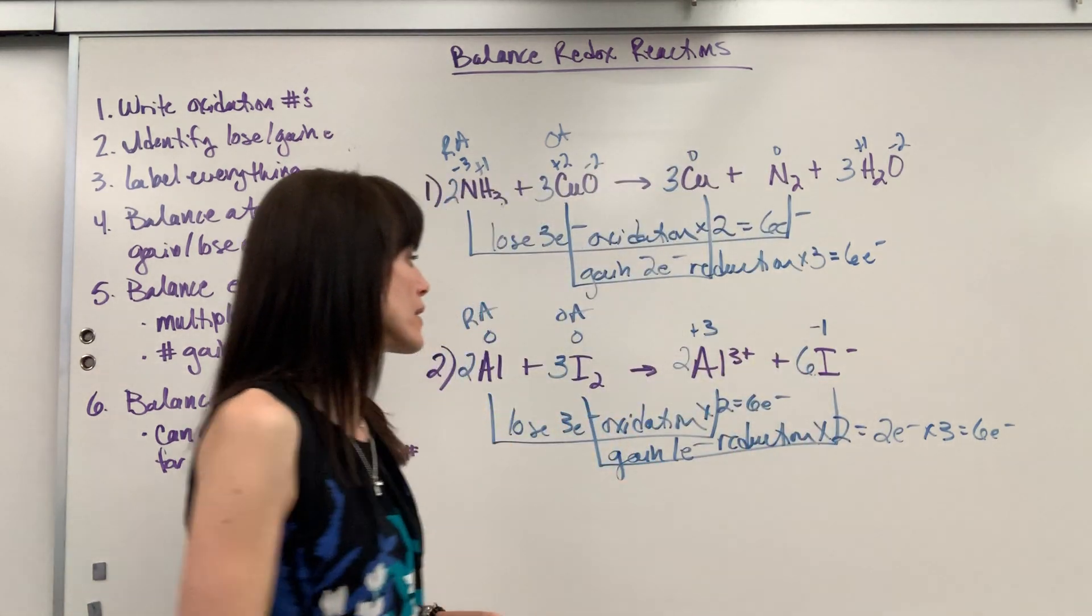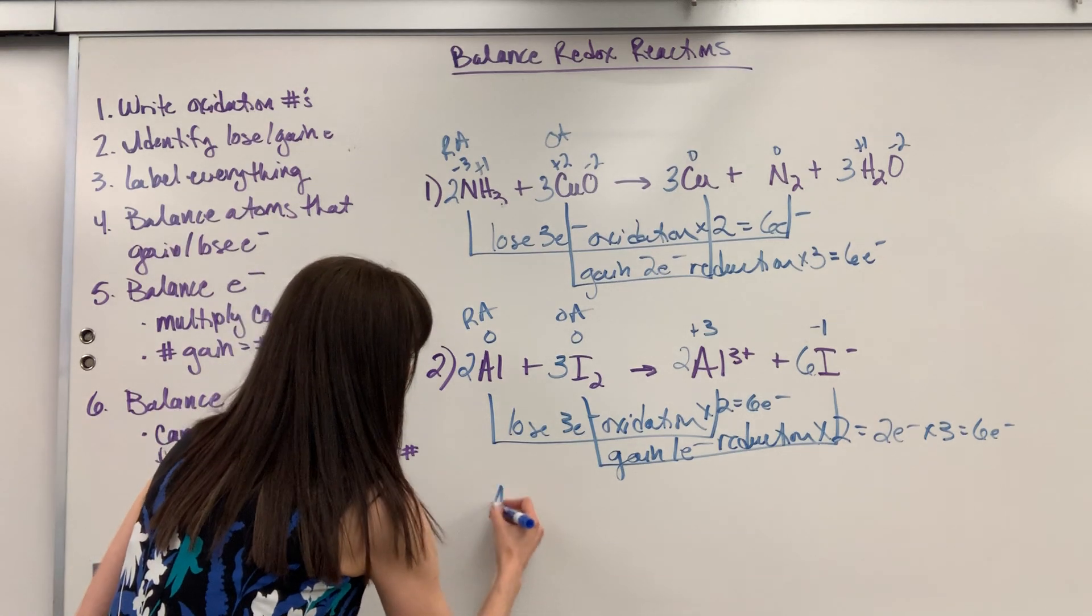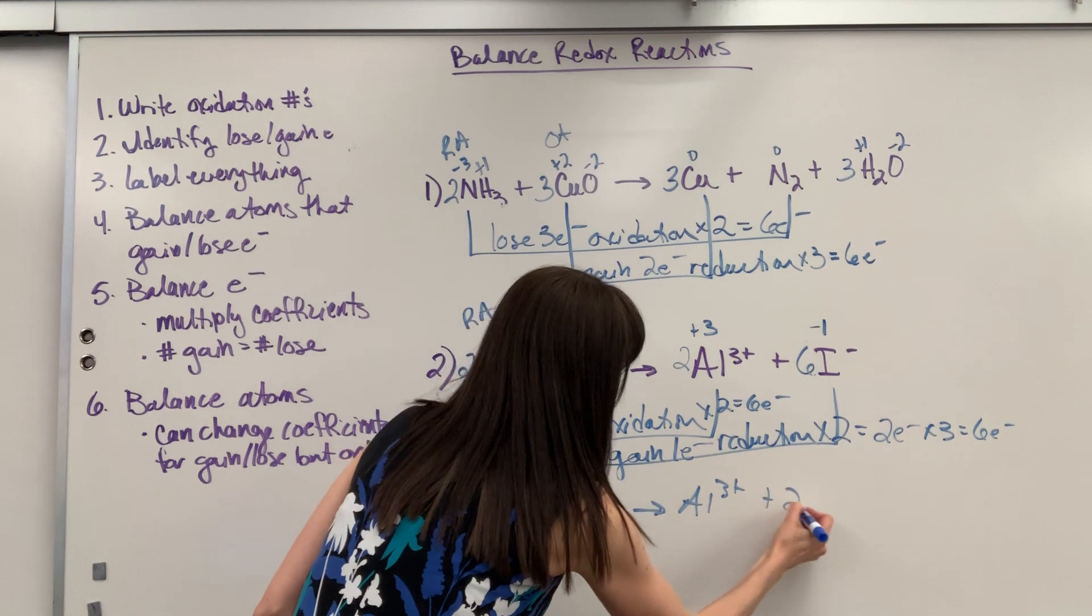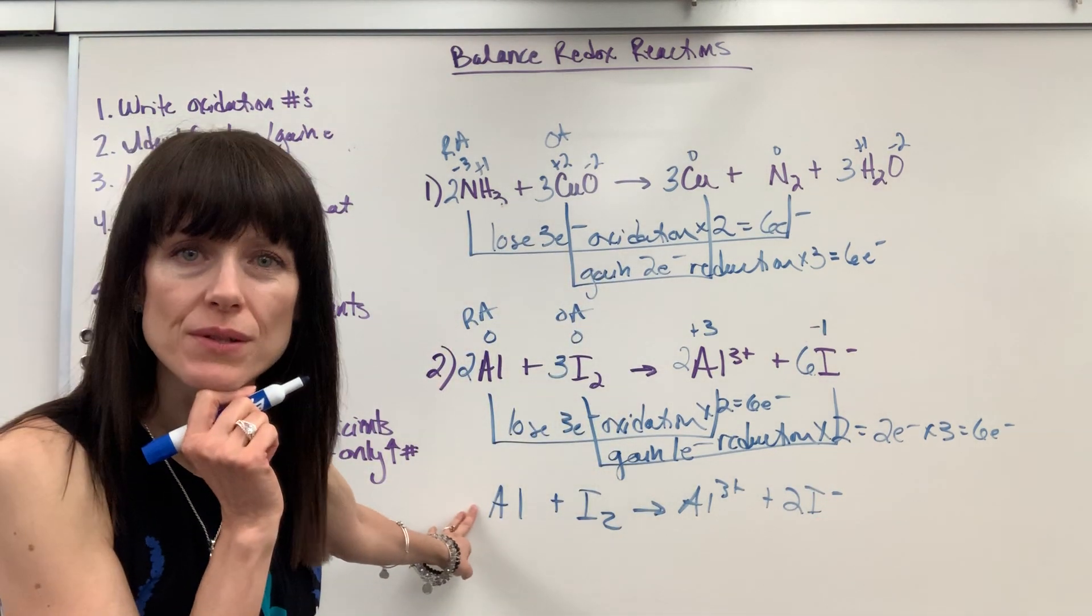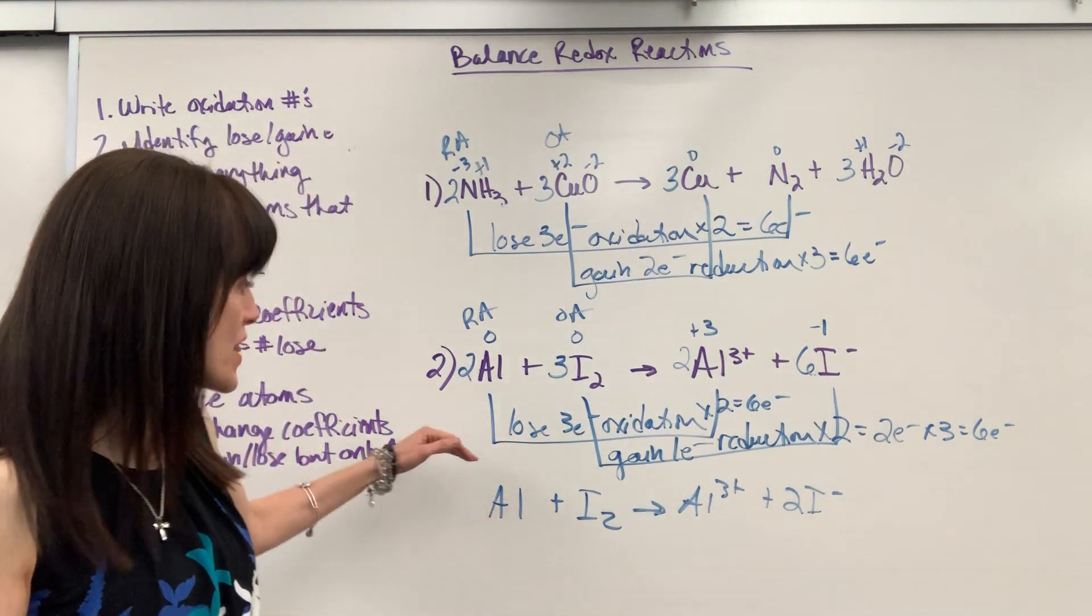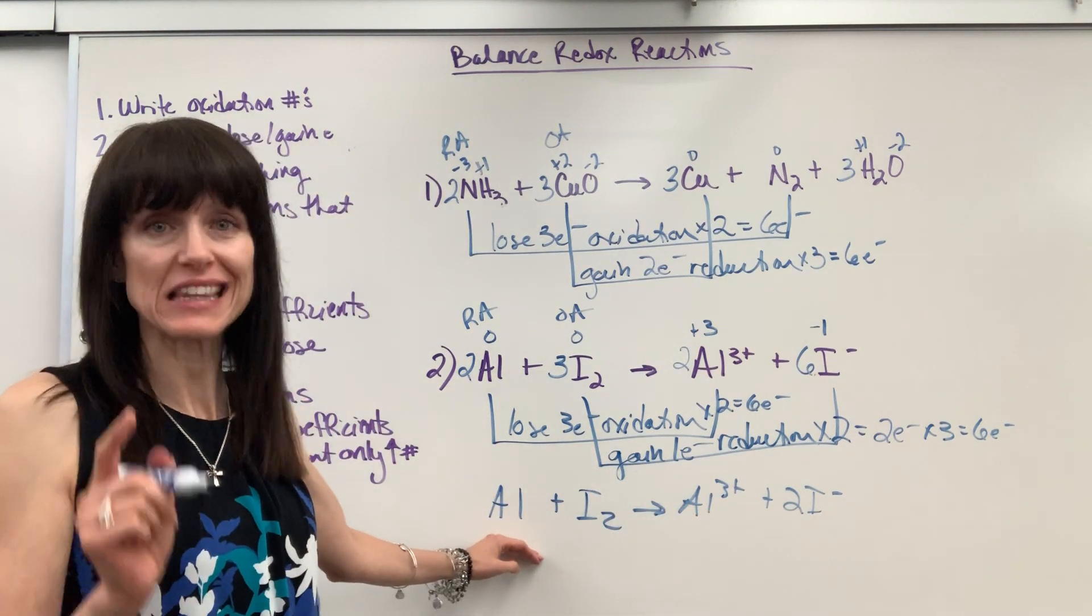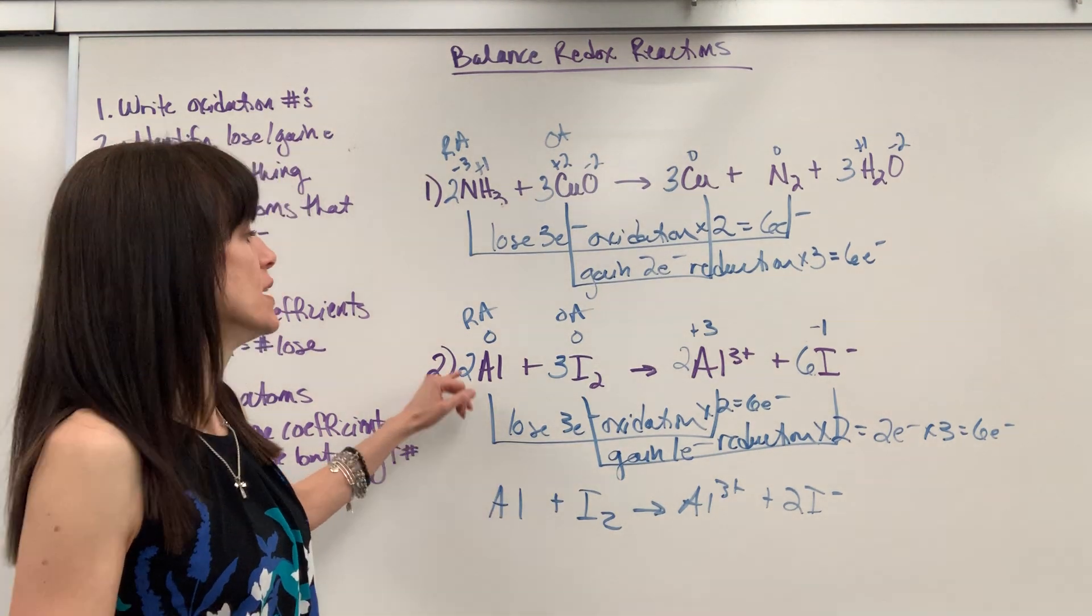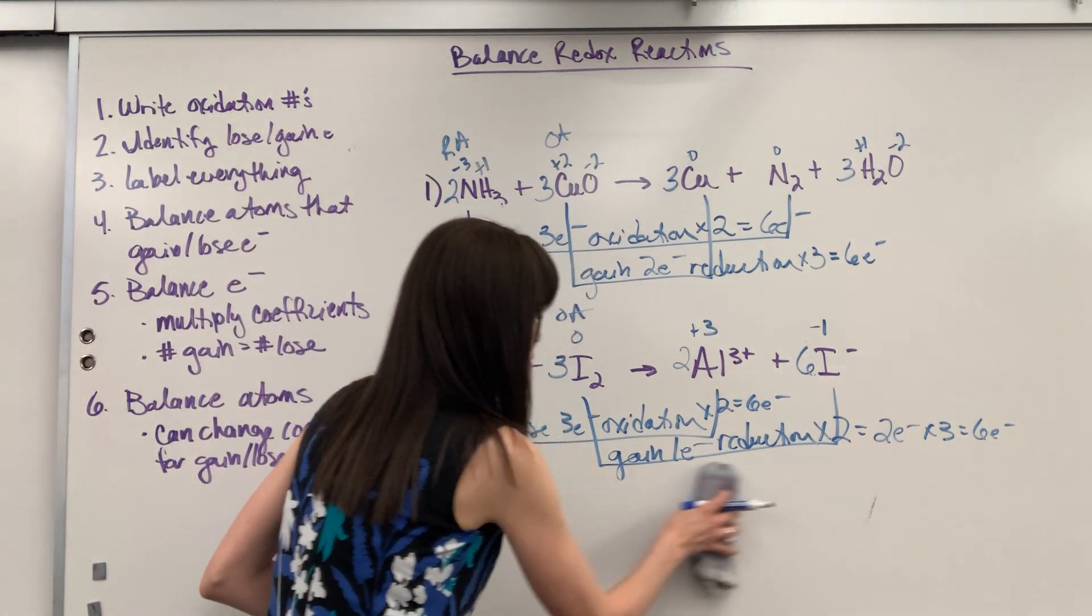Now here is the mistake that students make. They will look at this and go, just look at the purple and go oh that's so easy to balance. It's just Al plus I2 yields Al3+ plus 2I-. Well by writing that, what did they miss? They didn't balance electrons. You have to balance electrons. This is wrong. Are the atoms balanced? Yes. But it's wrong because the electrons aren't balanced. So be really careful. In redox you have to balance the electrons and the atoms. Common mistake that students will make.